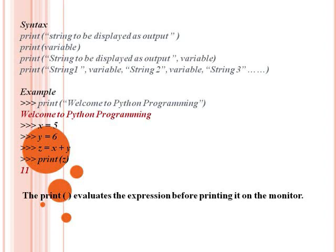Third method: we can use a string combined with a variable. Fourth method: we can use string1, variable, string2, variable, string3, variable — we can use any number of strings and variables in the same line. That covers the four print function syntax methods.